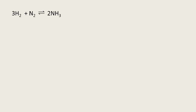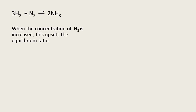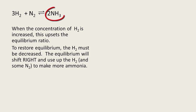Let's look at an equilibrium reaction. This reaction is called the Haber process, which is a really important reaction for the industrial production of ammonia, which is used to make fertilisers. When you increase the concentration of hydrogen, this will upset the equilibrium ratio. To restore the equilibrium, the hydrogen must be decreased, so the equilibrium must shift to the right towards the products and use up that additional hydrogen. This will result in more ammonia being made.